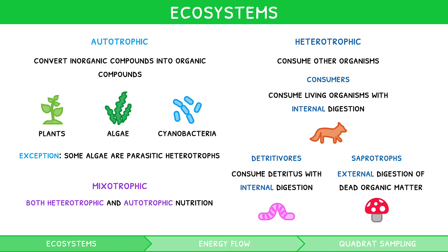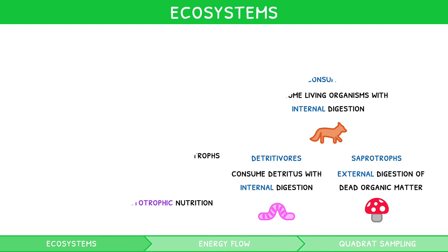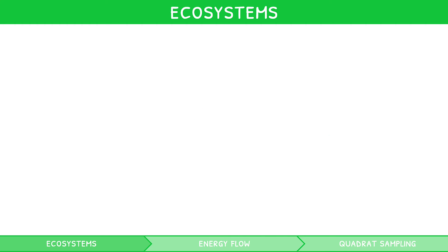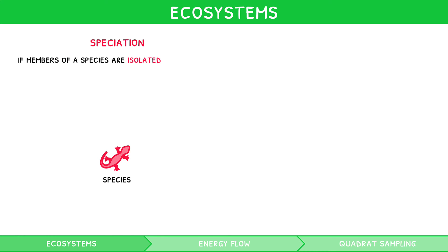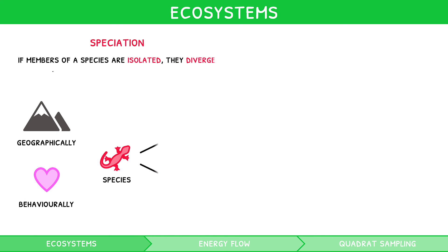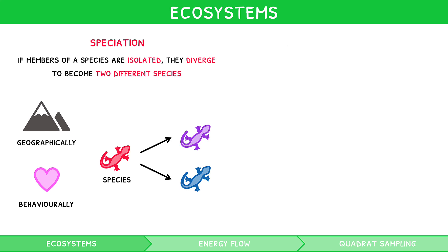The IB also expects you to understand two key ideas that build on the information we have discussed so far in this video. The first is speciation. This is the idea that if members of a species are isolated, either geographically or behaviourally, even of the same population, they diverge to form two separate species. For higher-level students, this will be explored in greater depth in our IB Biology Topic 10 video series.